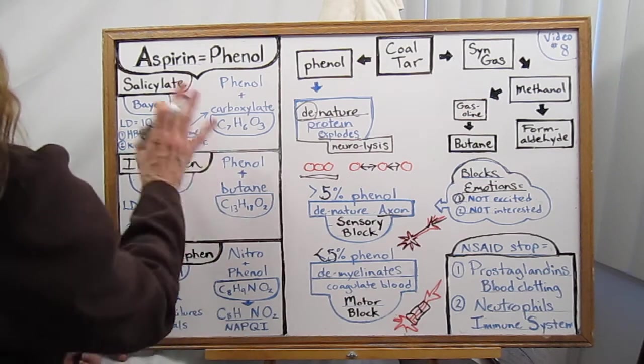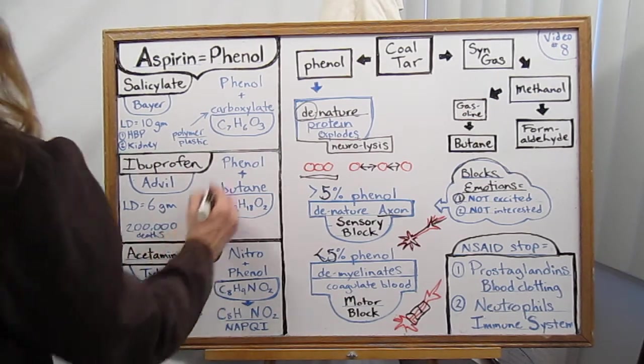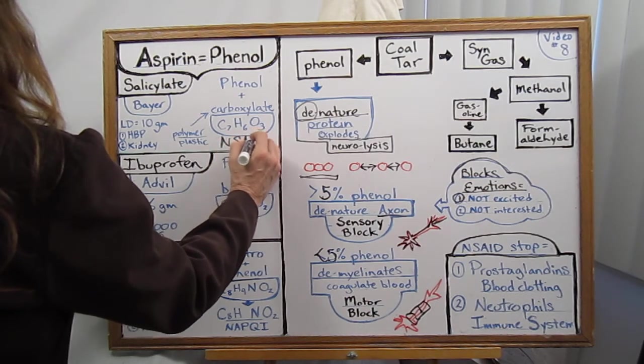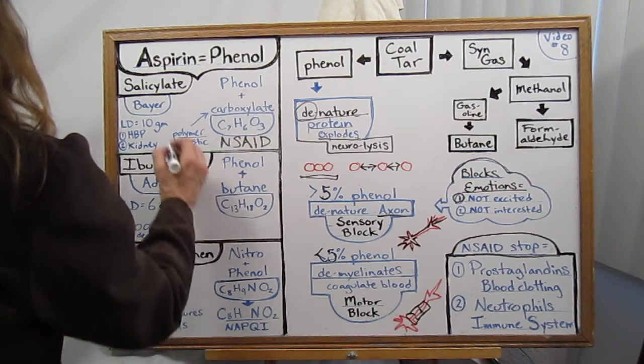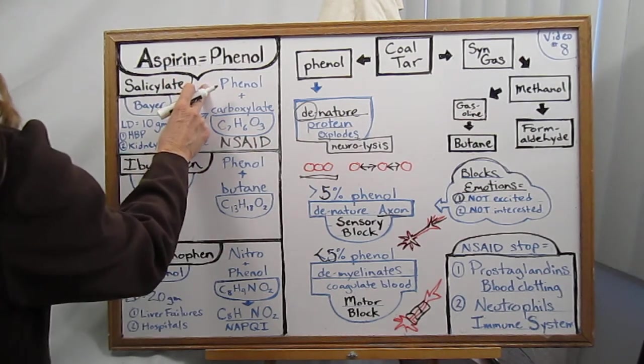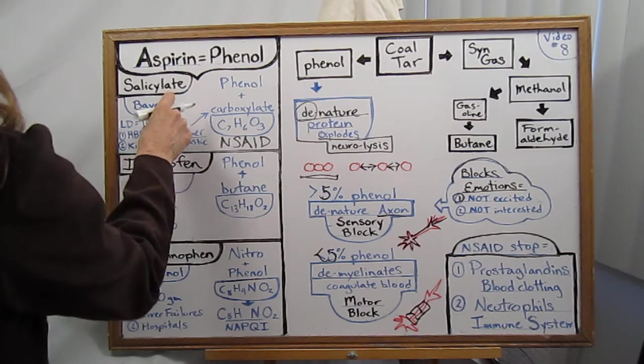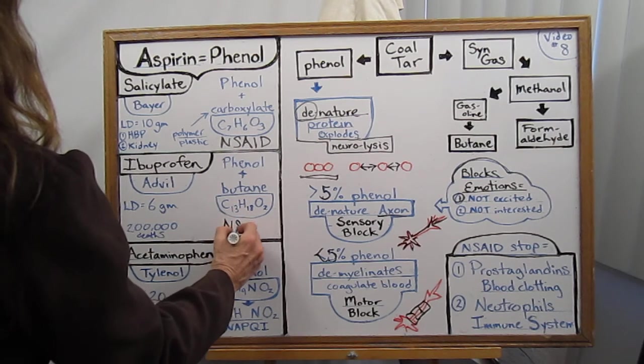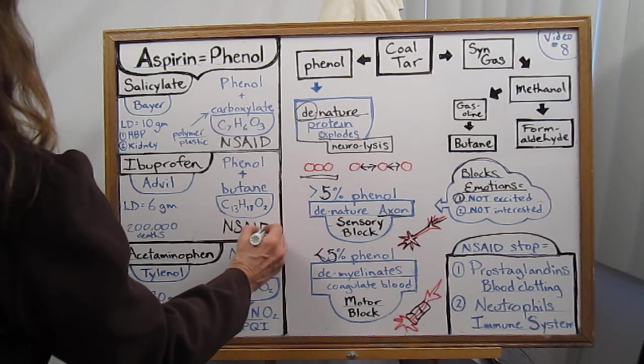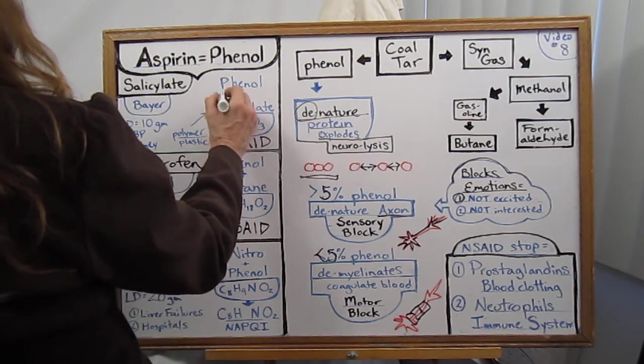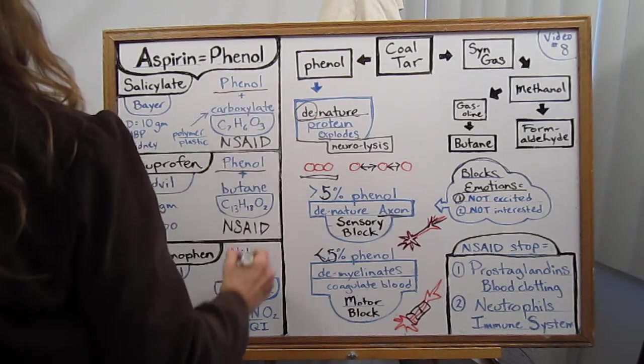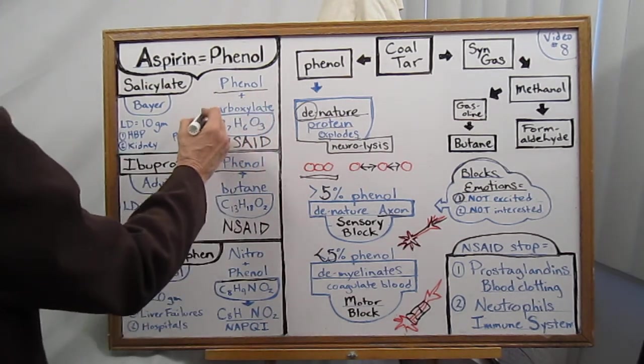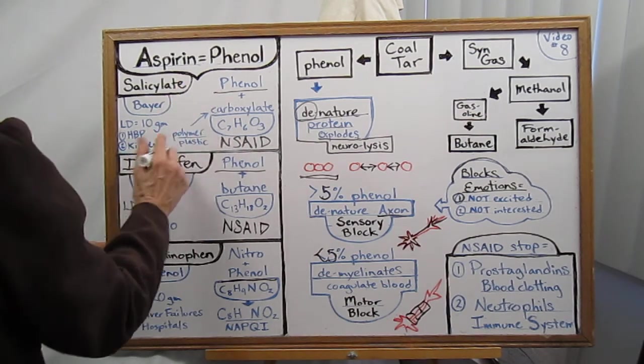So there's three categories that really fall into two categories. You have the NSAIDs - the non-steroidal anti-inflammatory drugs - of which salicylates, aspirin is the first thing they came out with in 1897, and also the ibuprofens, they are NSAIDs also. And notice: phenol, phenol, phenol - these are all phenol products. I've also written their chemical name so we can keep track of what's going on here.